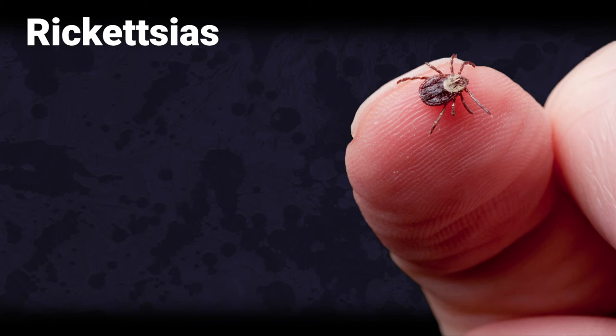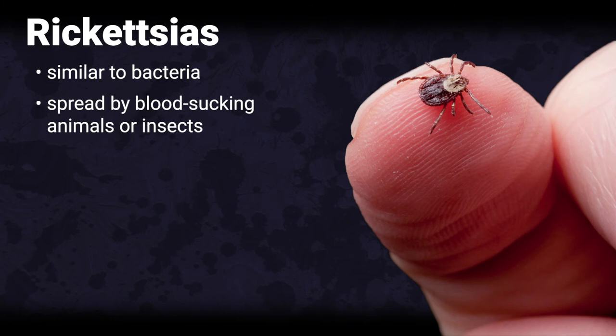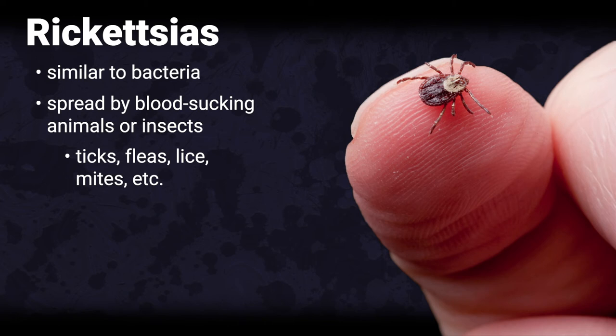Rickettsia are similar to bacteria. They are spread by different kinds of blood-sucking animals or insects, such as ticks, fleas, lice, and mites. The pathogen is transferred from the insect to the bloodstream of humans or other animals when the insect bites. Inhaling dust contaminated with dried feces of infected lice or fleas may also cause infection. Diseases include Rocky Mountain spotted fever, typhus, and Q fever.